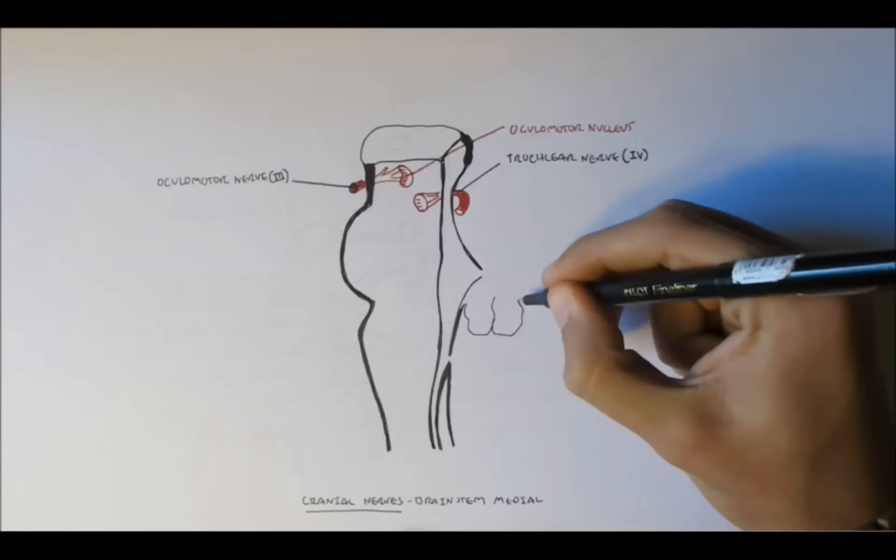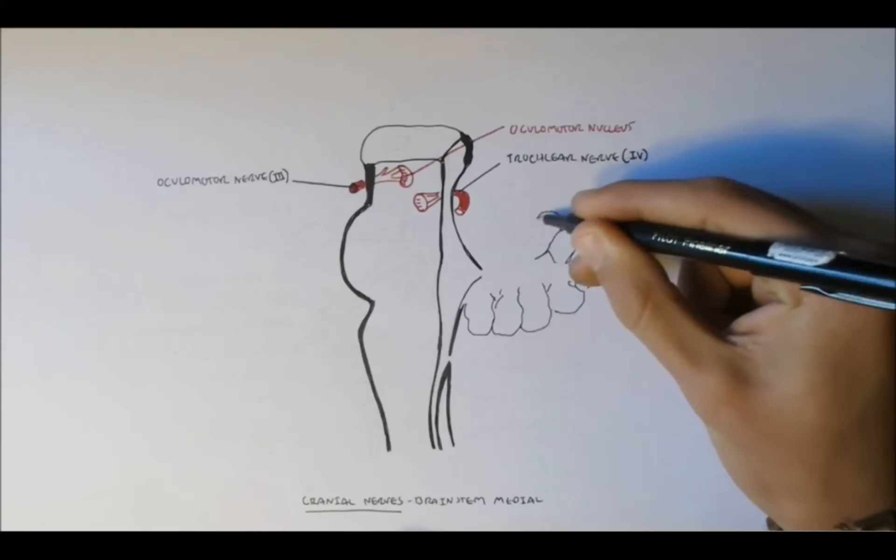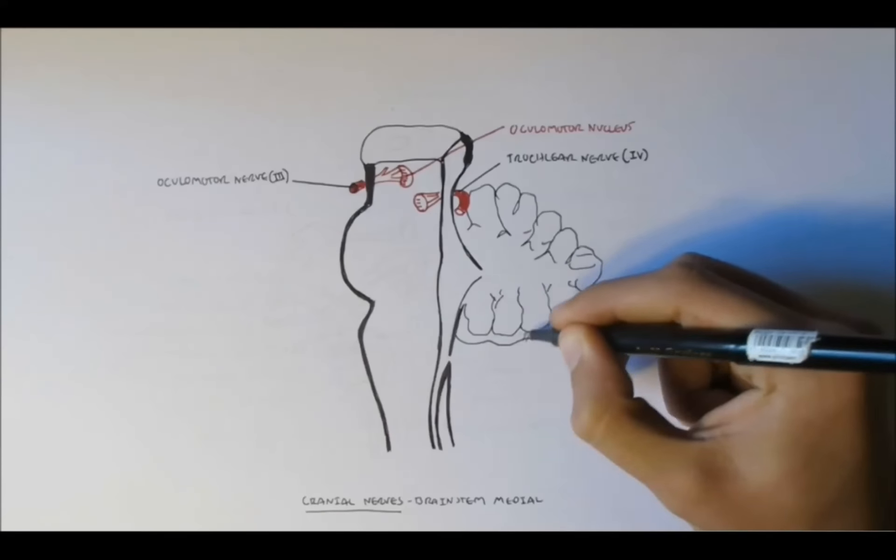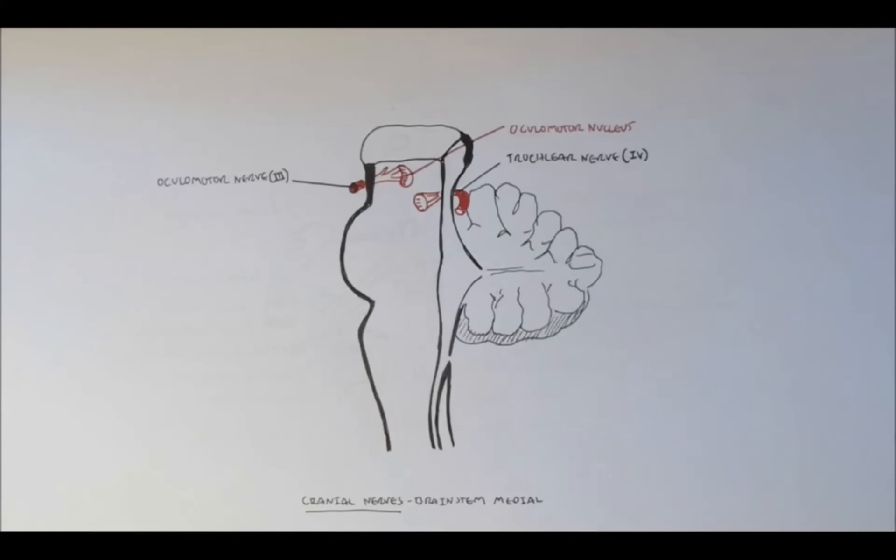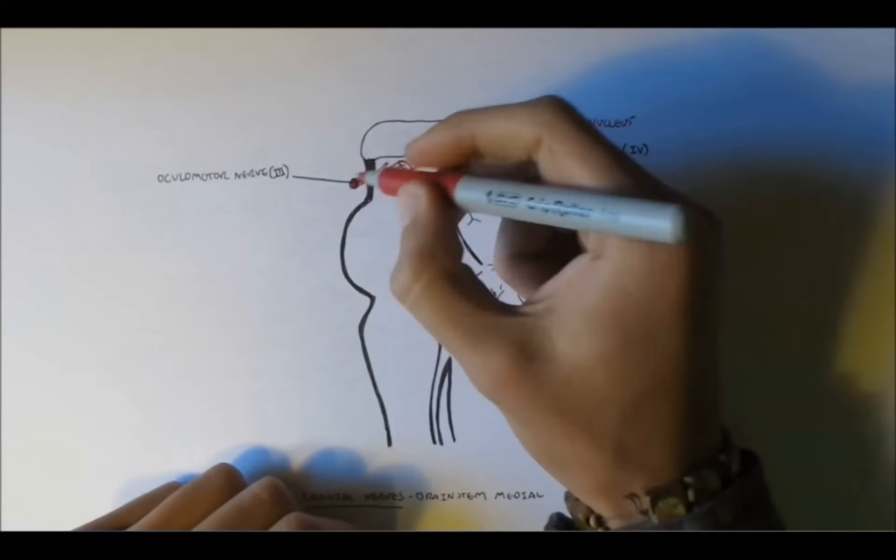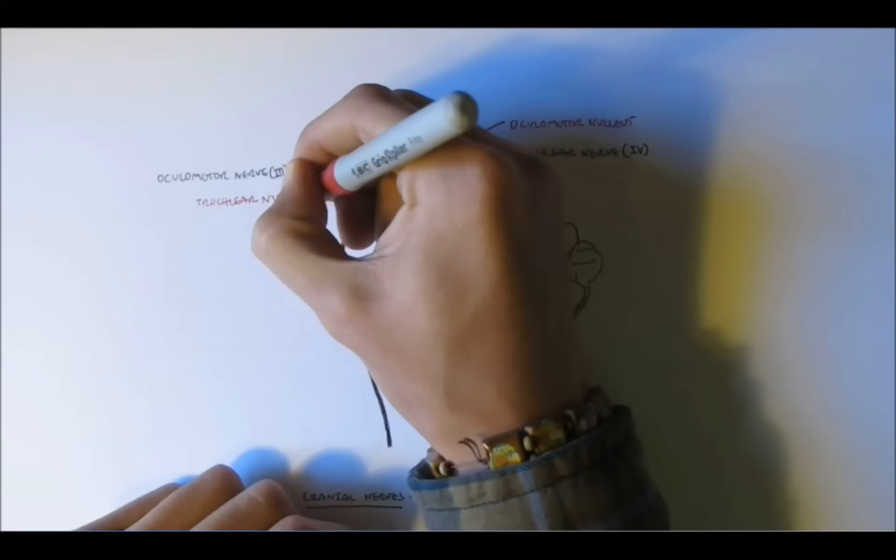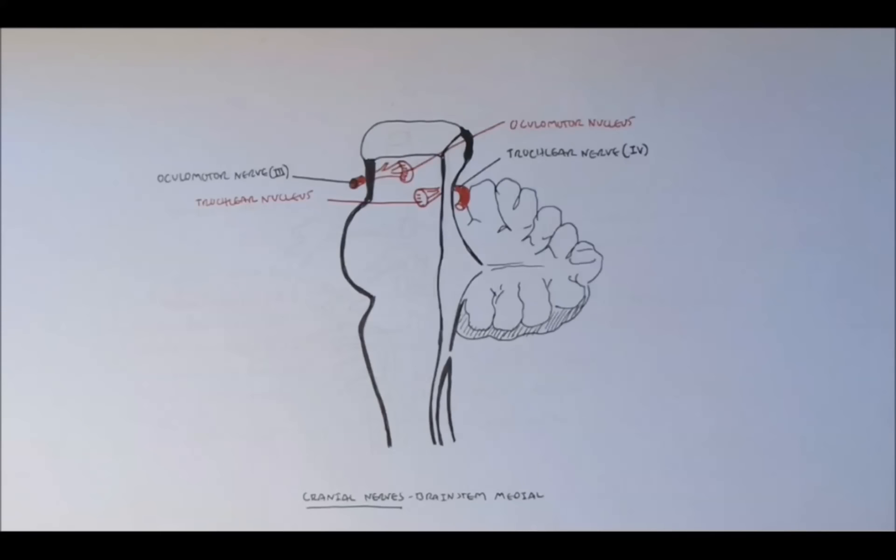We have the trochlear nerve, nerve 4, which is just above the cerebellum. The cerebellum, as mentioned in my previous video, is for balance and movement coordination. And the nucleus is referred to as the trochlear nucleus.